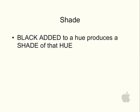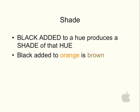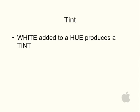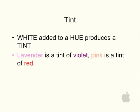Shade, on the other hand, is created by having black added to a hue, and it produces a shade of that hue. For example, black added to orange is brown — it creates a brown shade. Tint. You create a tint by taking white and adding it to a hue, and this produces a tint. Violet has had white added to it, which creates the tint lavender.